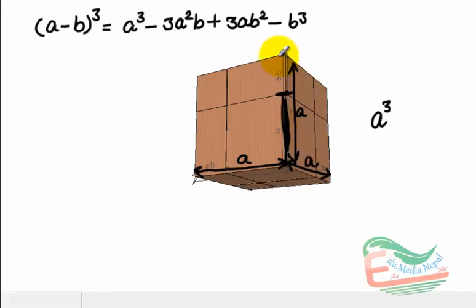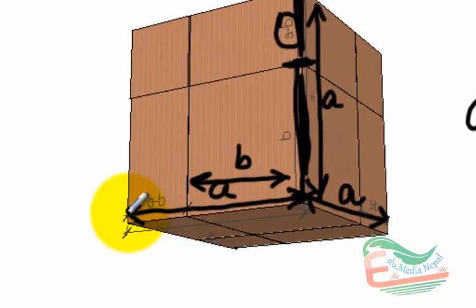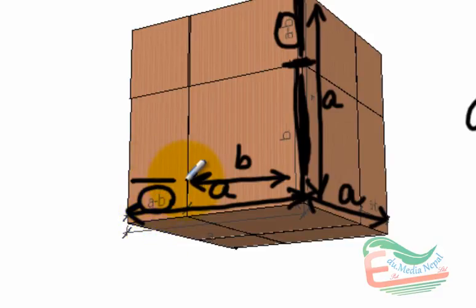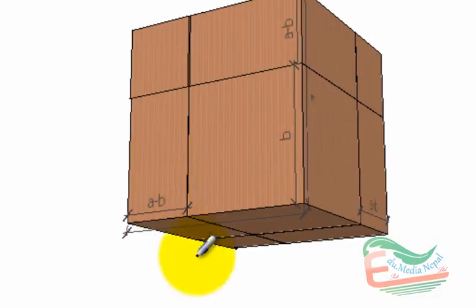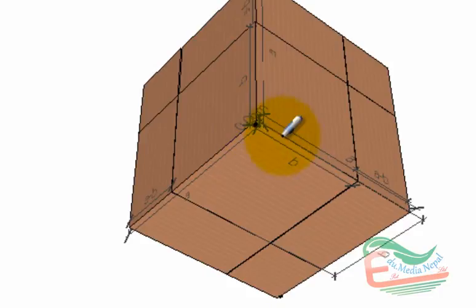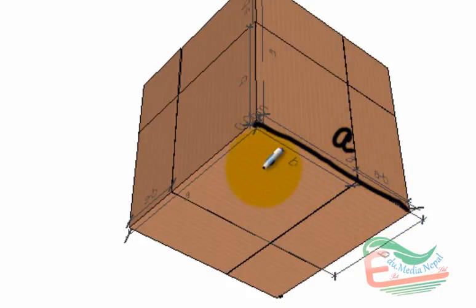The remaining distance of a is from here to here — this part is a minus b. Here also, suppose this part is b; then out of a, if this part is b, then the remaining distance is a minus b. So it's clear that the edge of the cube is a, and it is divided into two parts.